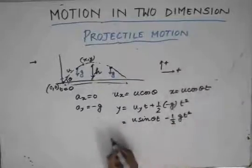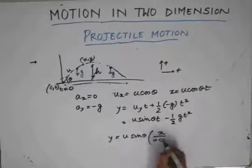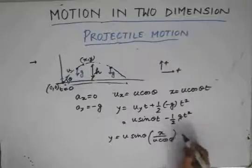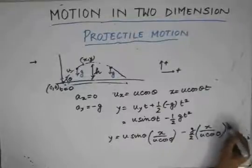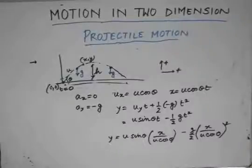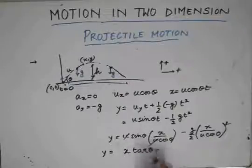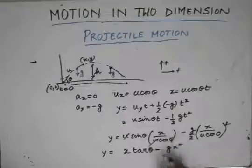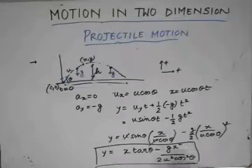We can now substitute the value of t from the x-equation into the y-equation and we get y equals u sin theta times (x / u cos theta) minus (g/2) times (x / u cos theta) squared. This involves a quadratic term in x and a linear term in y, confirming this is the equation of a parabola. Simplifying, y equals x tan theta minus g x squared divided by 2u squared cos squared theta. This is the equation of the trajectory — it is better to remember this formula as it is used in many problems.